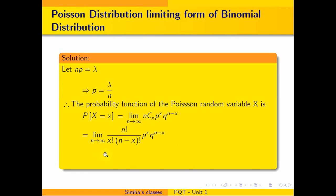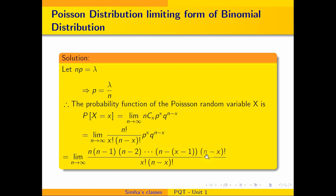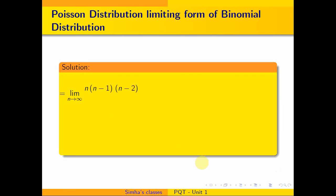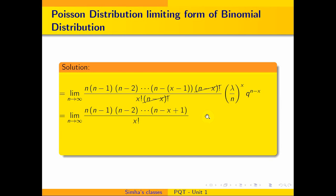Expanding the factorial, nCx equals n factorial divided by x factorial times n minus x factorial. We can write n factorial as n times (n minus 1) times (n minus 2) and so on down to 1, with denominator x factorial times n minus x factorial. Here p equals lambda over n, so p to the power x equals lambda over n to the power x, times q to the power n minus x.